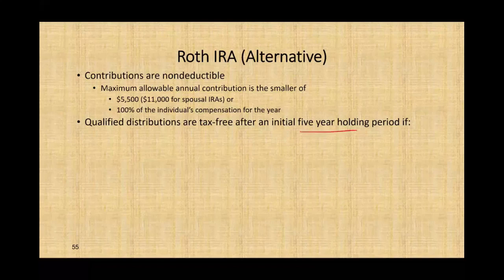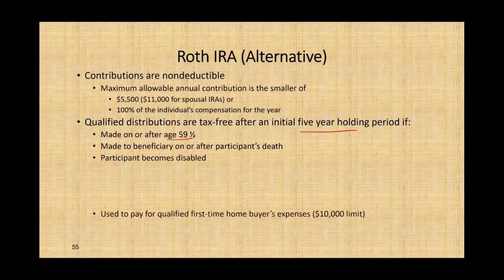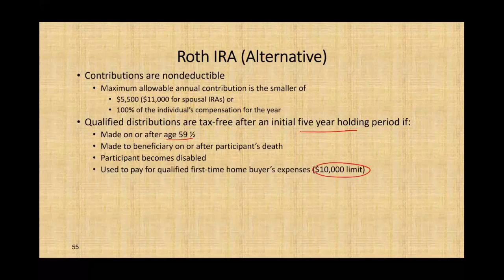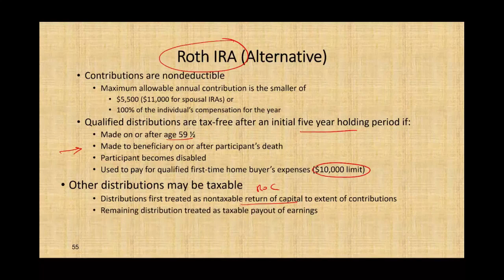You have to hold it for five years. Qualified distributions are tax-free after the initial five-year period and if made on or after age 59 and a half, made to a beneficiary on or after the participant's death, if the participant becomes disabled, or used to pay first-time homebuyer expenses — limited to $10,000. If you take a Roth IRA distribution before meeting those requirements, the distribution is first treated as return of capital to the extent of your contributions, and any remaining amount above what you contributed is treated as taxable earnings.